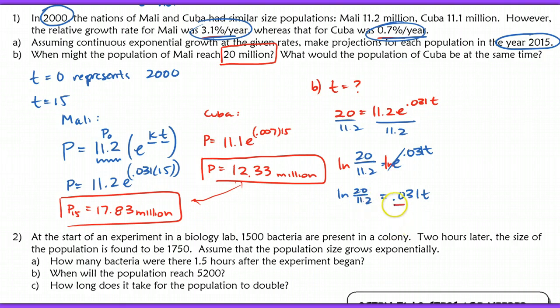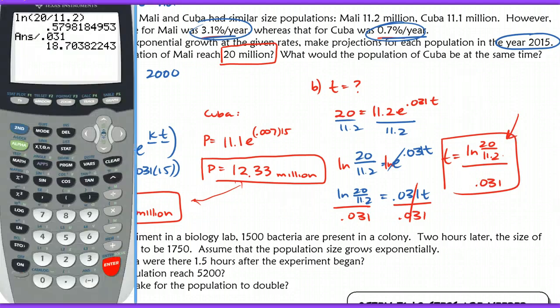To further isolate, I'm going to divide out the 0.031, and I'm left with T equals the natural log of 20 over 11.2 divided by 0.031. Rather than calculating this piece by piece here and then using a rounded answer, we're going to store this in our calculator. As you can see, I've typed this into my calculator, and I'm going to get an answer of approximately 18.7 years. So after about 18.7 years, Mali's population will grow to be 20 million.